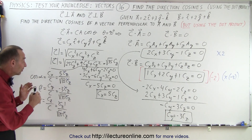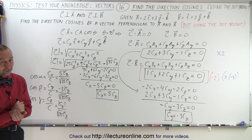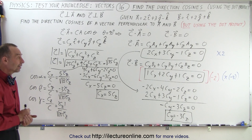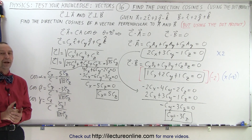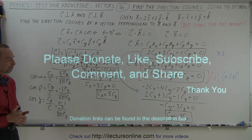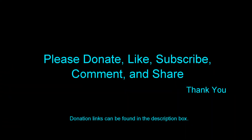And notice I have the very same direction cosines as I did in the previous video: 5 divided by the square root of 35, minus 3 divided by the square root of 35, and 1 divided by the square root of 35. Since I got the very same direction cosines and checked them on the previous video, they're probably correct. That's how we do it using the dot product. Thank you.